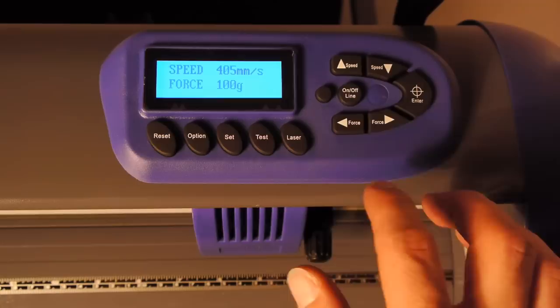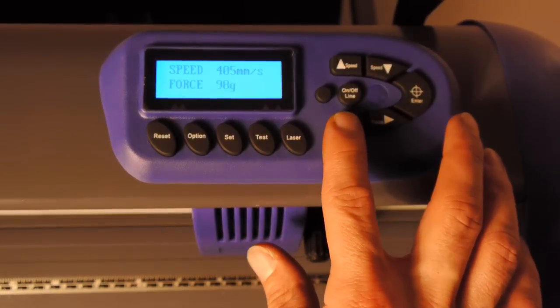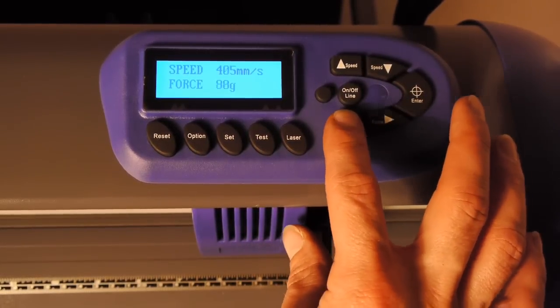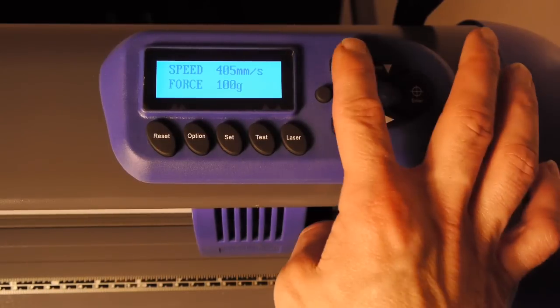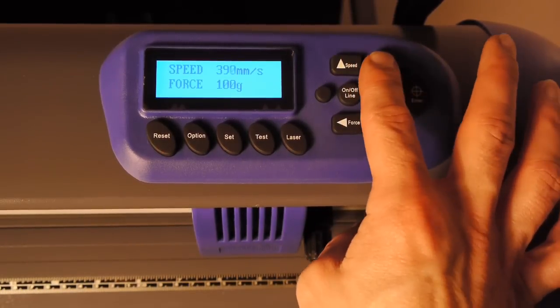When you first power the cutter on, you should see the name of the cutter displayed on the LCD panel. You set the speed and force simply by pressing the corresponding arrows.